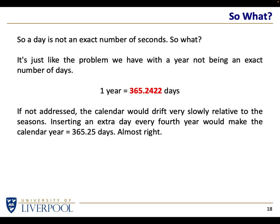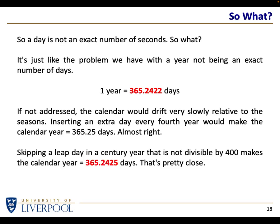But 365.25 is still slightly off. The actual rule is: add a leap day every leap year, but skip a leap day in a century year that's not divisible by 400. That gives a year length of 365.2425 — very close to the actual year of 365.2422. By adopting this rule, you end up with a calendar kept in sync with the seasons for many thousands of years.